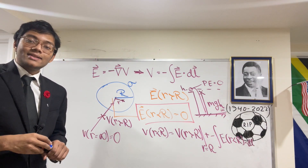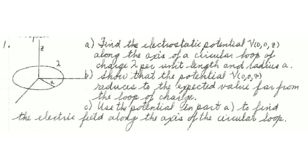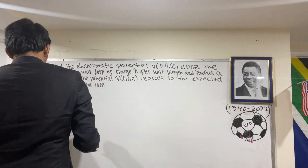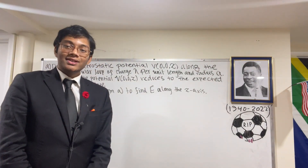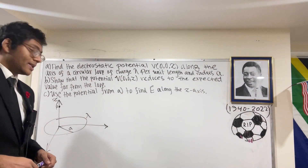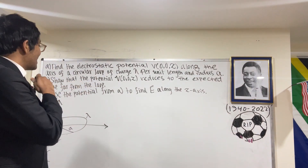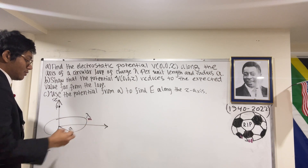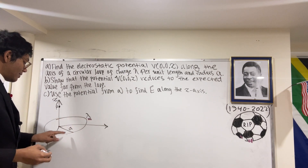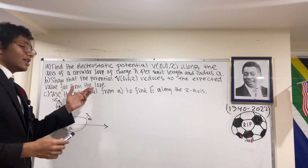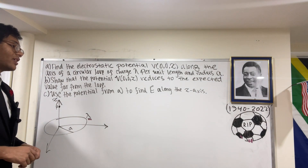Now let's go ahead and take a look at an example problem. Find the electrostatic potential V(0, 0, z) — that is, the electric potential only along the z-axis — along the axis of a circular loop of charge with linear charge density lambda per unit length and radius a. Part b: show that the potential reduces to the expected value far from the loop. Part c: use the potential from part a to find the electric fields along the z-axis.